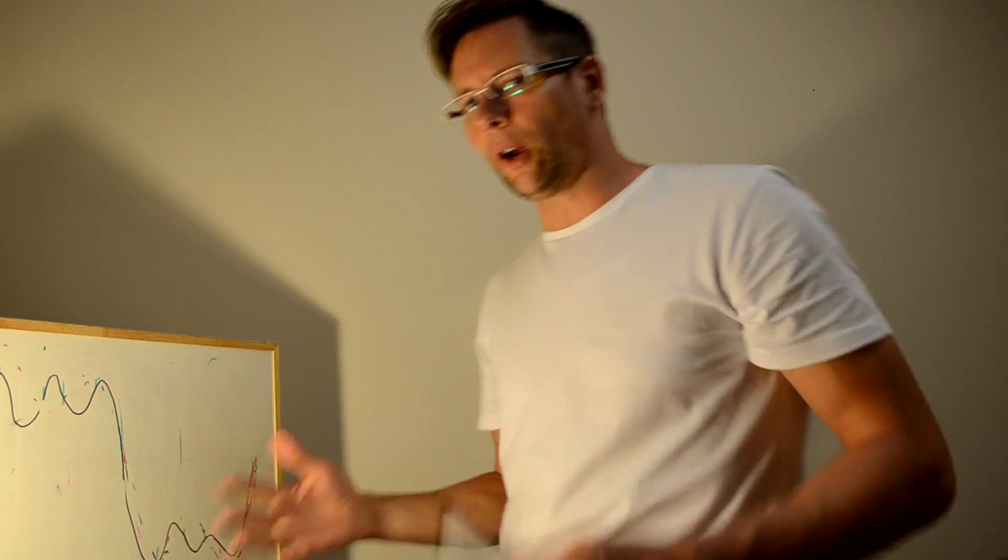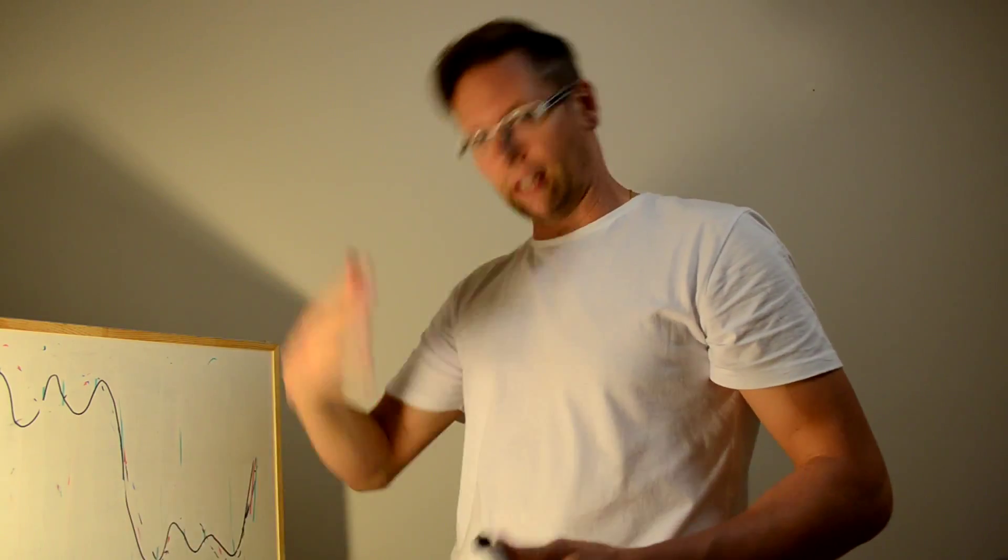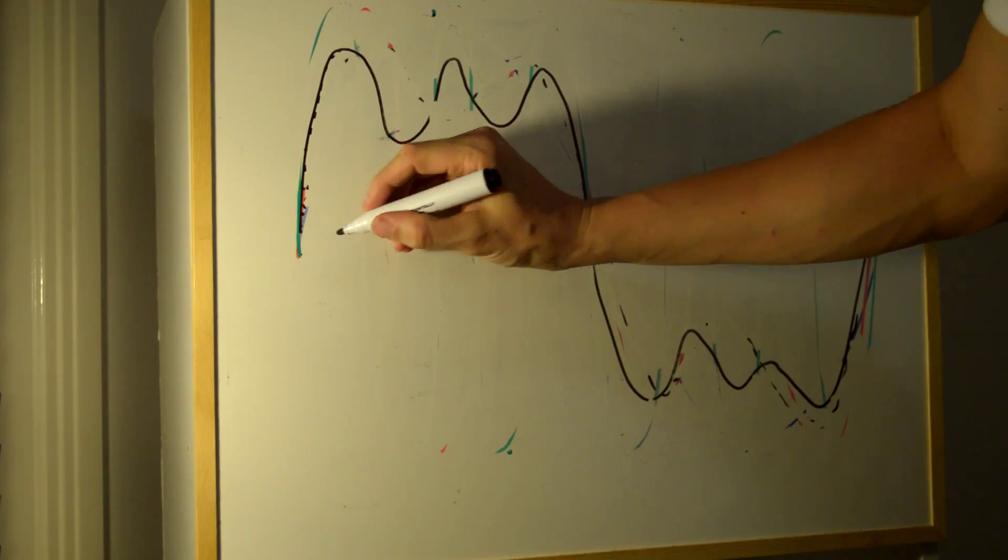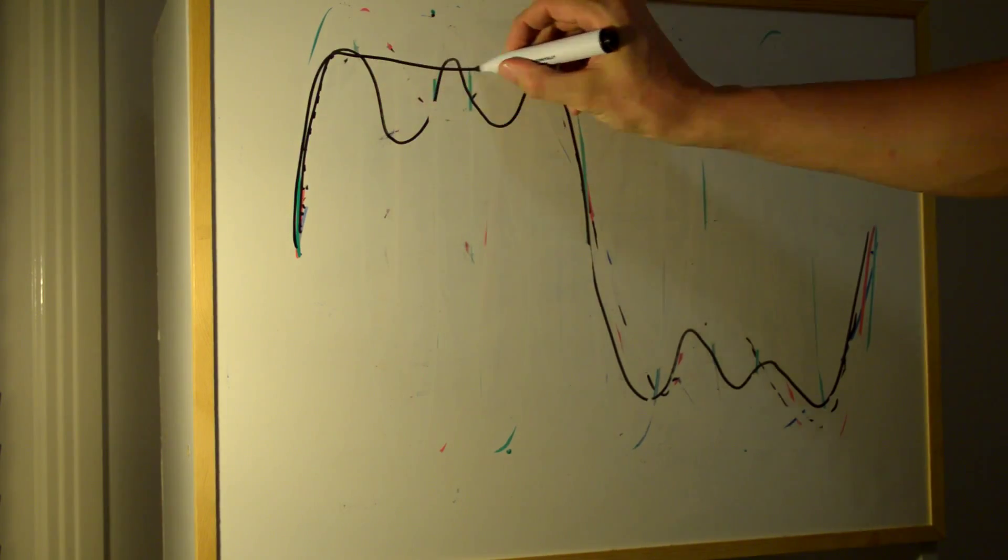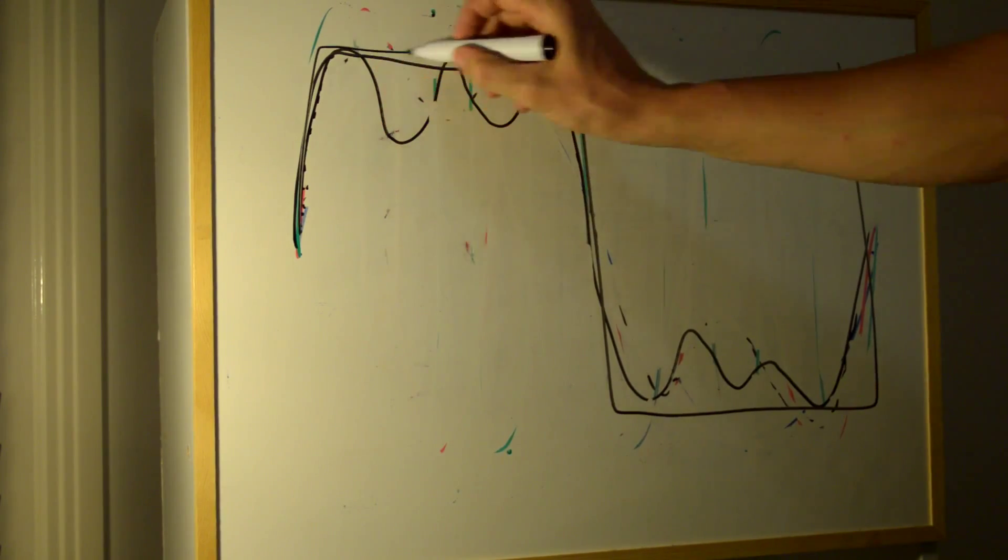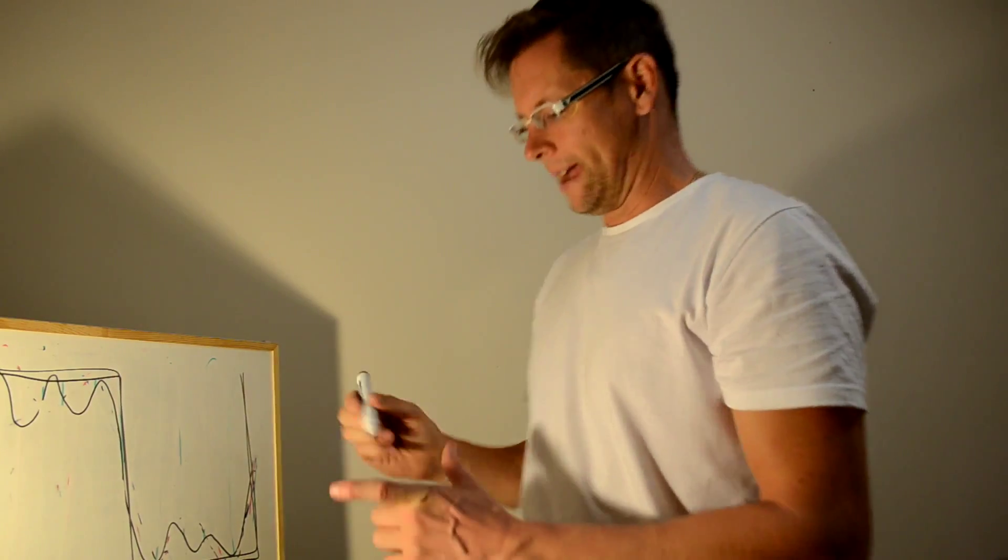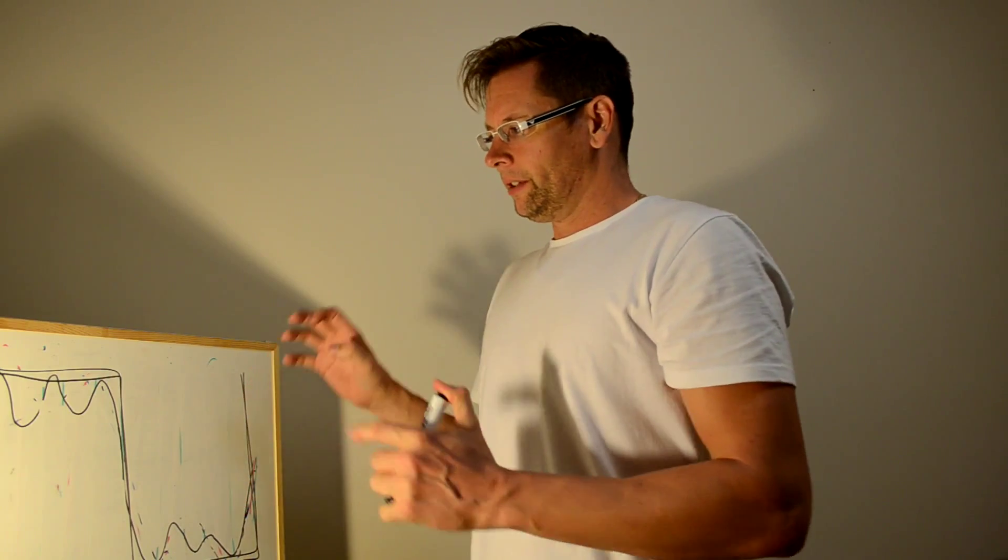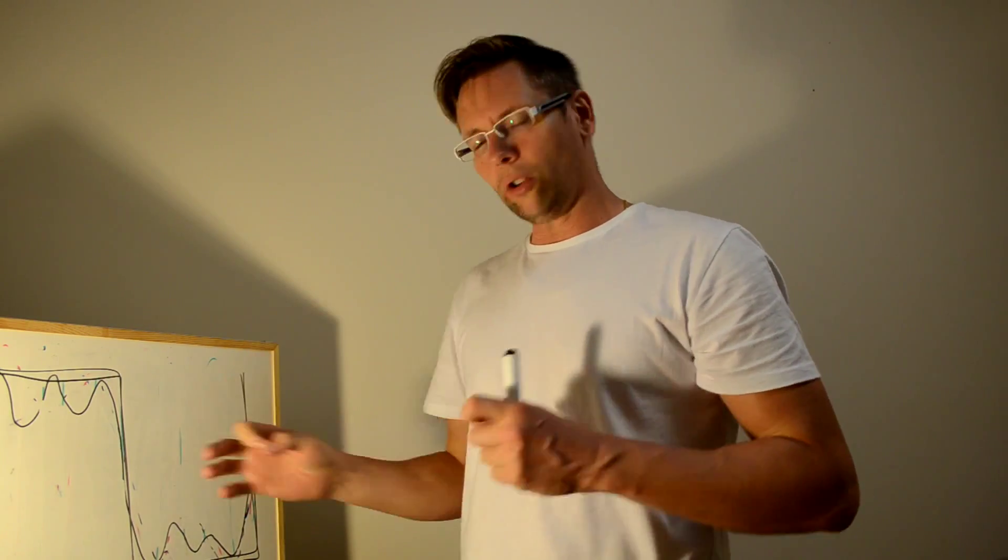And if you kept going and going, and added the 7th, 9th, 11th and so on harmonic, what would happen is, eventually, that would get to a flat signal, a square wave. So what we can tell by that is that a square wave contains odd harmonics. It's made up of a lot of frequencies.